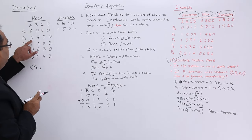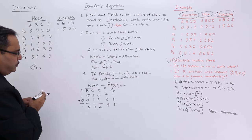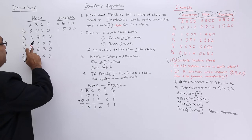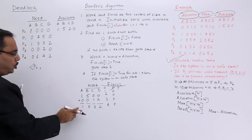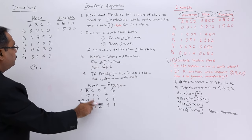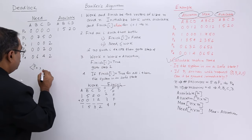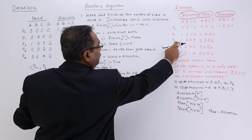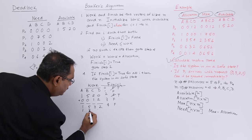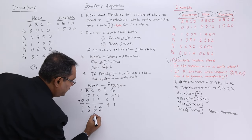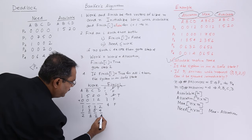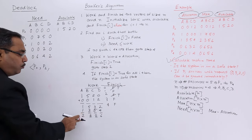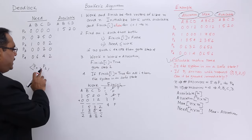Now let us go for P1. P1's need is 0,7,5,0 — but 7 is greater than 5 (available in work), so P1 cannot be executed. Let us go for P2: need is 1,0,0,2 — requiring 1 (have 1), 0, 0, requiring 2 (have 2) — so P2 can get its completion. P2 will become true, and P2's allocation 1,3,5,4 will be added. The new work value becomes 2,8,8,6.